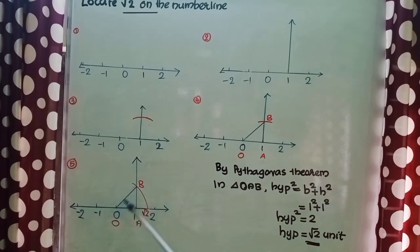Now you see the figure here. This OB, take that length by using a compass and draw that arc to the number line. The point where it touches the number line is the location of the root 2 on the number line.